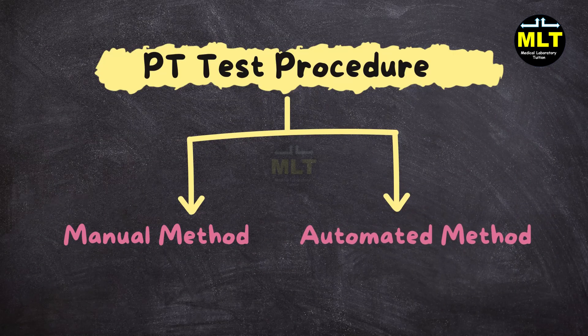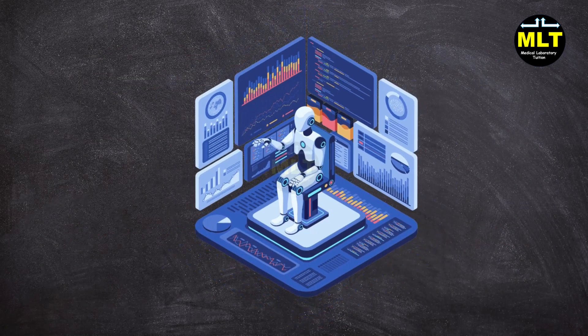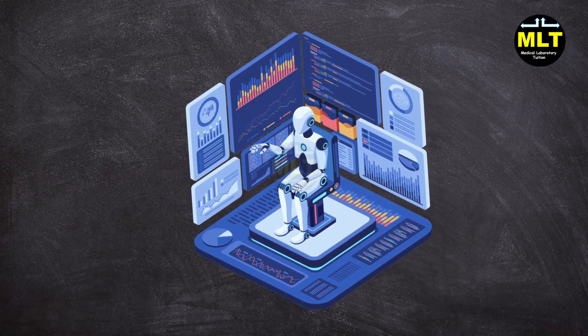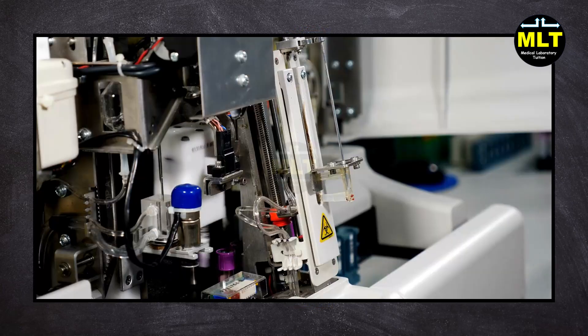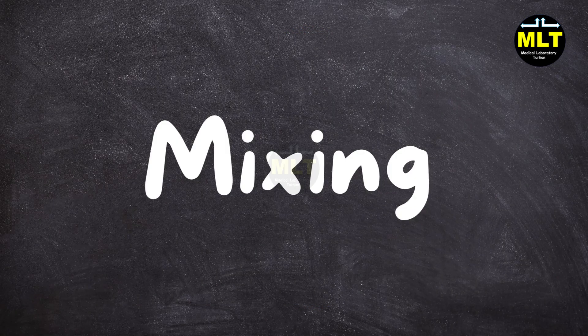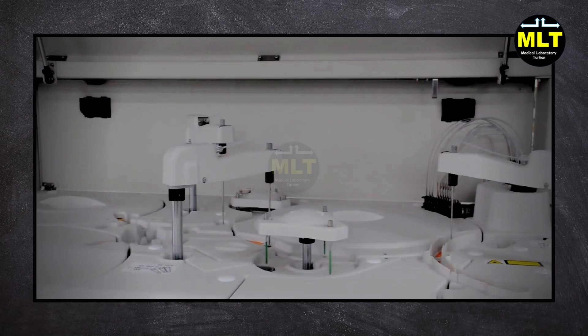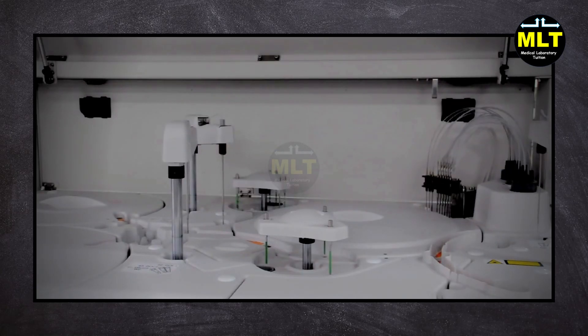Automated method: In many labs, automated analyzers are used. The machine handles the mixing, timing, and measurement, giving you results faster and more consistently.